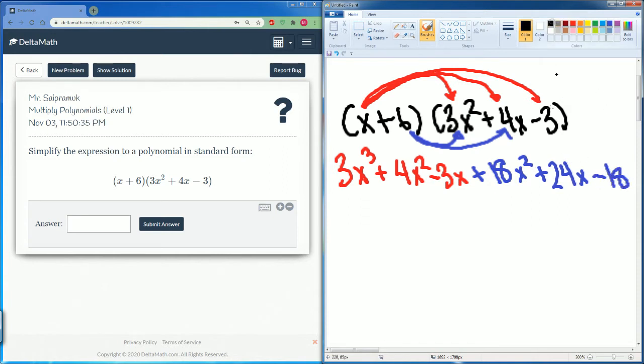There's some like terms here. So you see 4x squared and 18x squared. That together becomes 22x squared. Then I'm going to change this to a different color. Negative 3x and 24x comes together. That gets you plus 21.